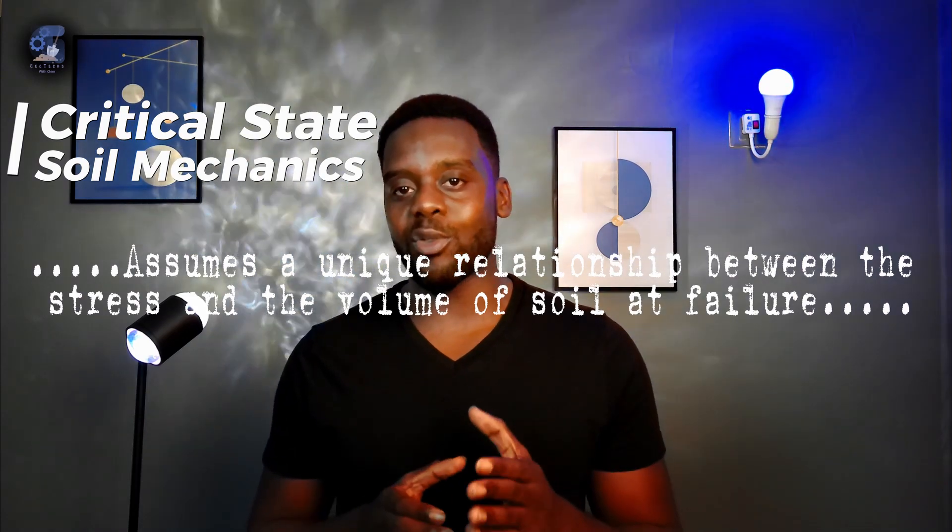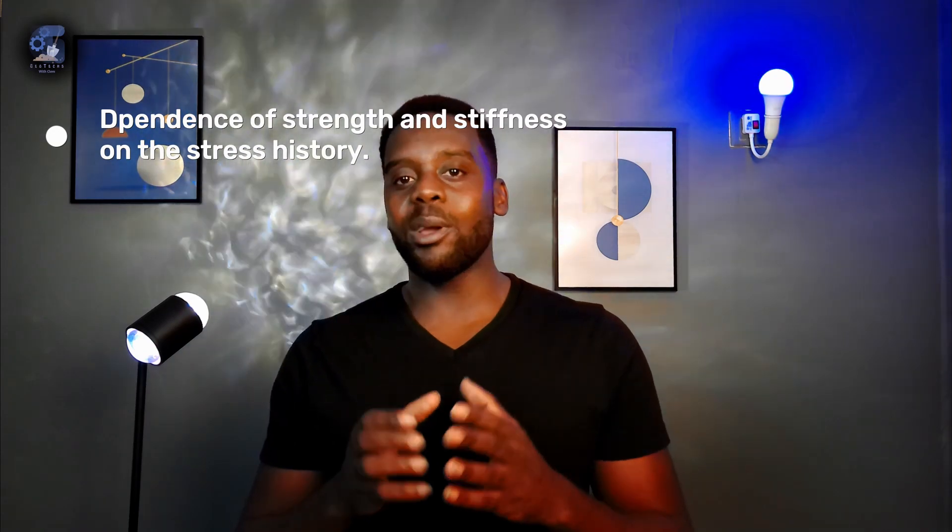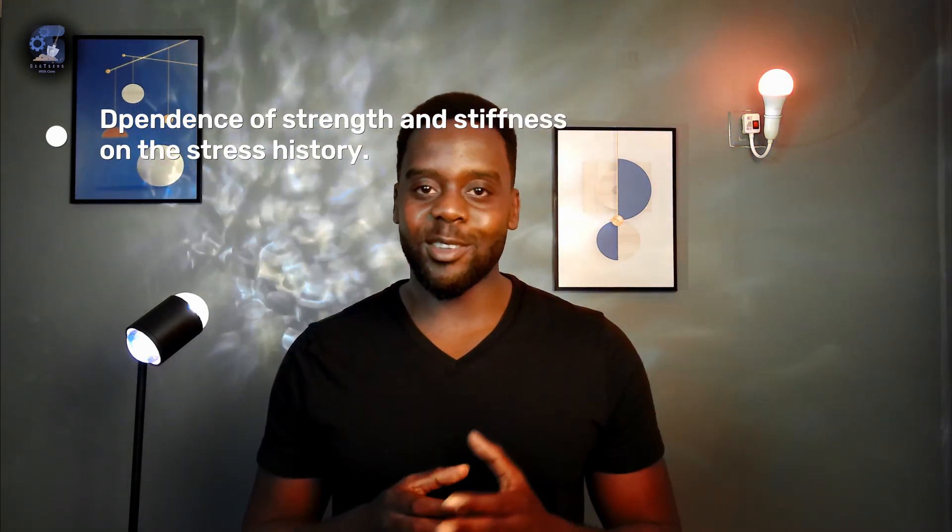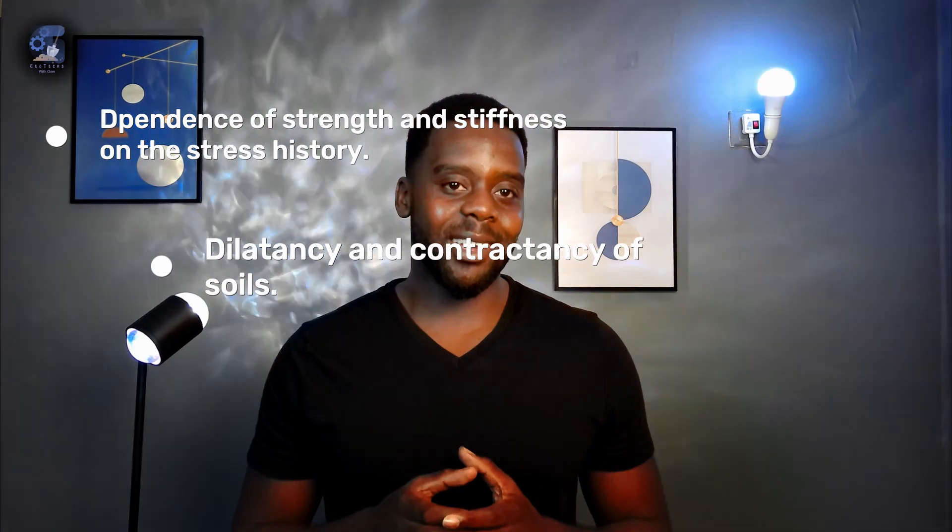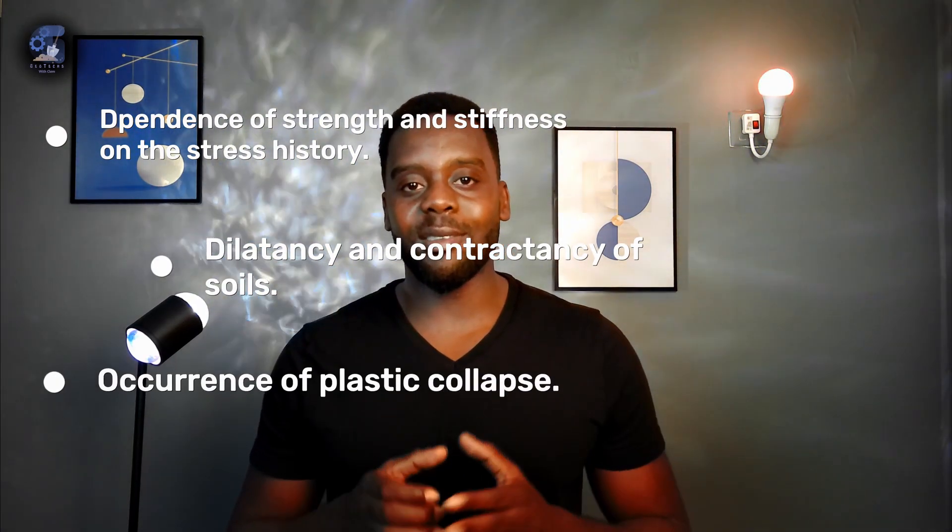This model is based on the concept of critical state soil mechanics, which assumes that there is a unique relationship between the stress and the volume of soil at failure. The model can capture the essential features of soil behavior, for example, the dependence of strength and stiffness on the stress history, the dilatancy and the contractancy of the soil, and the occurrence of plastic collapse.